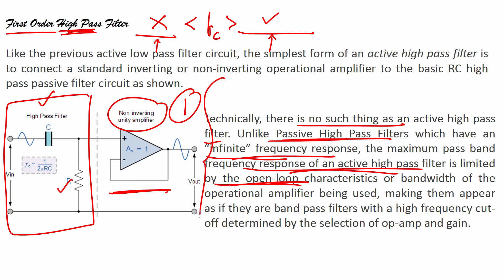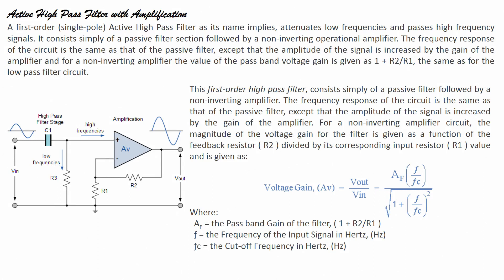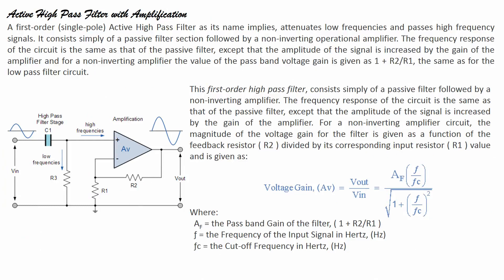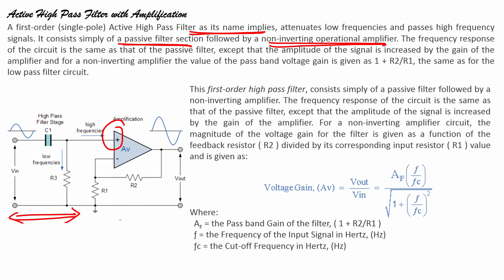What kind of active high pass filter can we design and what will be the voltage gain? We are using a unity gain amplifier here, but if I want to amplify the signal I need to use a non-inverting amplifier. The output of the filter is fed to the non-inverting terminal of the operational amplifier. A first order active high pass filter attenuates low frequencies and passes high frequency signals. It consists simply of a passive filter section followed by a non-inverting operational amplifier.